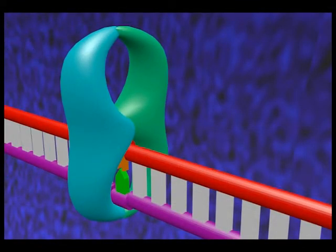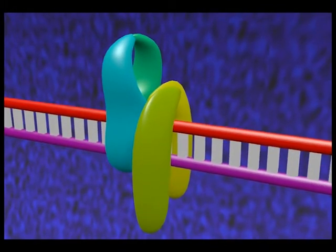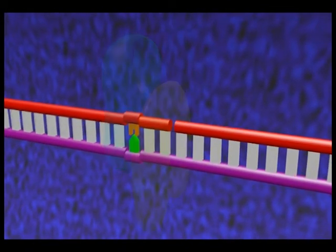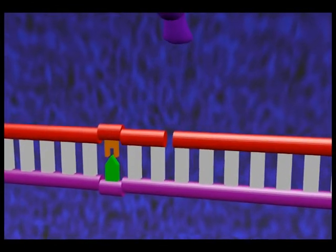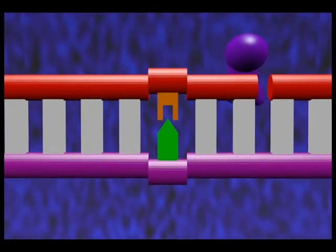In the MutS-MutL complex, the MutL makes the DNA incision in the region near the mismatch. This is where the Exo1 protein begins removing bases on the newly synthesized strand, and DNA repair by DNA polymerase and DNA ligase happens as usual.